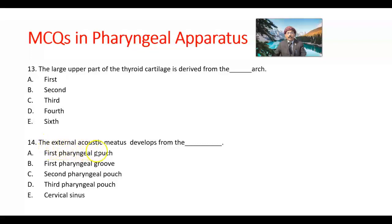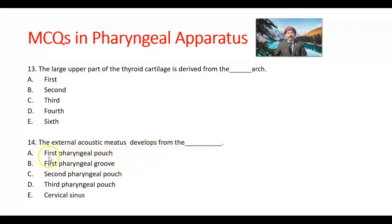Question number 14. External acoustic meatus develops from where? Options: first pharyngeal pouch, first pharyngeal groove (also called cleft), second pharyngeal pouch, third pharyngeal pouch, or cervical sinus. The cervical sinus disappears very soon. The external acoustic meatus develops from the first pharyngeal groove. The answer is B.